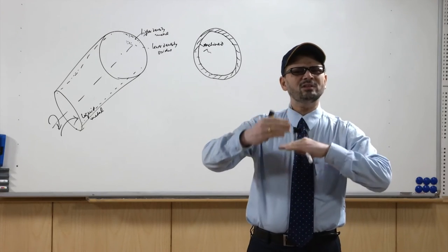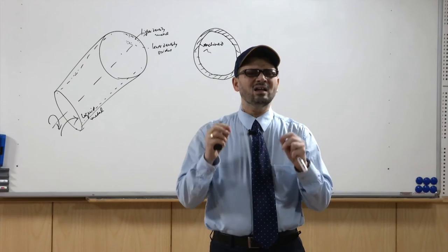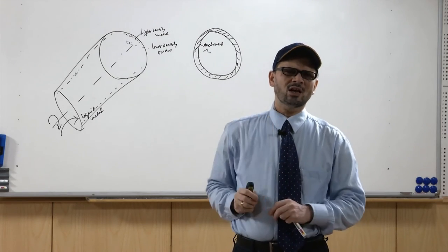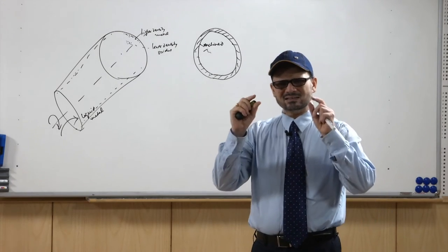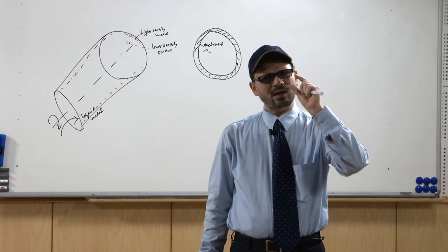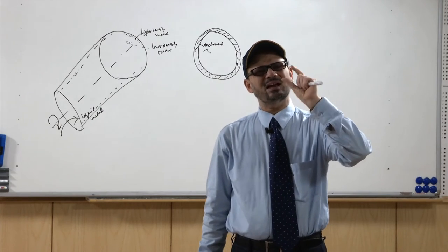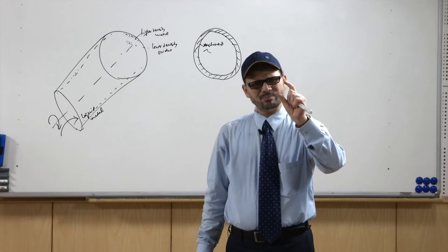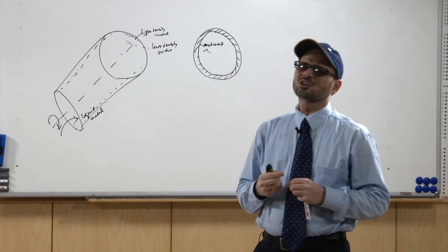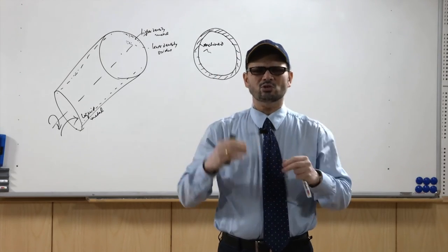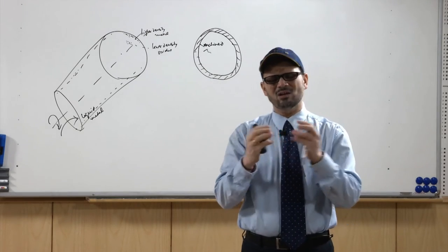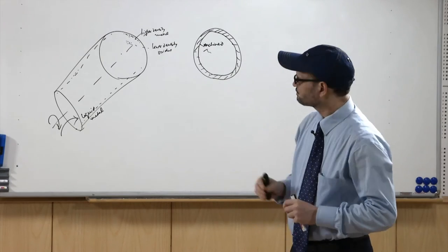The wax pattern is coated with ceramic slurries and then stuccoed with ceramic particles. This process of dipping and stuccoing is repeated with drying in between until a hard ceramic surface of the required shell thickness is achieved. The wax pattern includes all runners, sprues, and gates. Normally more than one casting is attached to a common runner, and then they are heated.